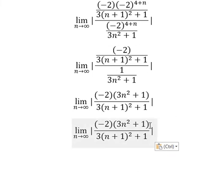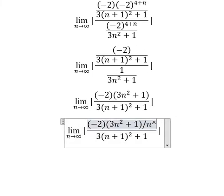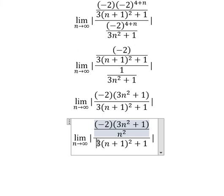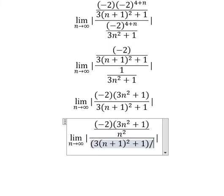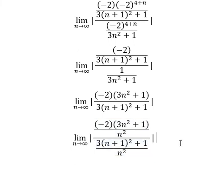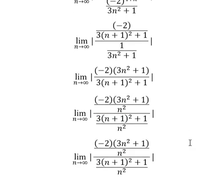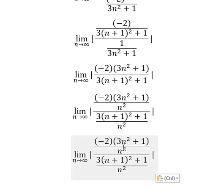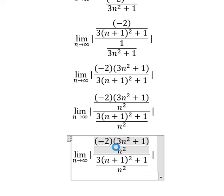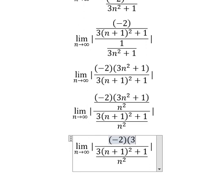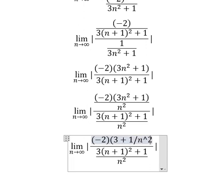We divide both sides by n-square. So 3n-square divided by n-square, number 1 divided by n-square, n-square goes inside here, 1 divided by n-square. So we have 3 plus 1 over n-square.